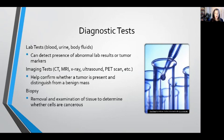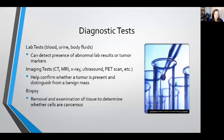There are several different diagnostic tests that can be used to diagnose cancer. There are lab tests such as looking at blood, urine, or other body fluids — these can detect the presence of abnormal lab results or different tumor markers, such as an abnormally high level of white blood cells or a certain type of tumor marker. There are imaging tests such as CT, MRI, x-ray, ultrasound, or PET scan, which look at different parts of the body and help confirm whether a tumor is present and distinguish it from a benign mass. And then there's a biopsy, which is removal and examination of tissue under a microscope to determine whether the cells in that tissue are cancerous. Oftentimes a combination of these different diagnostic tests is used.